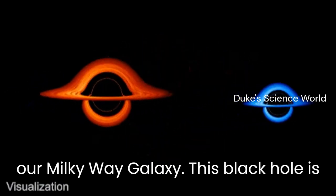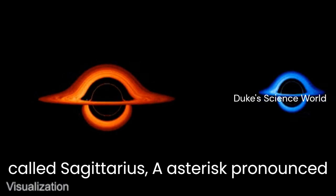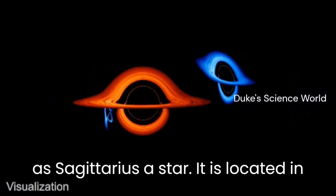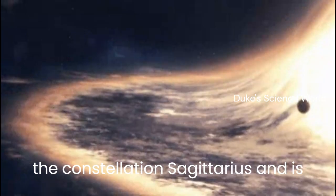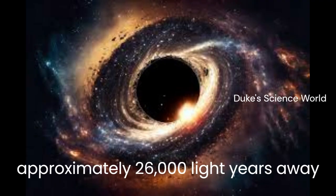This black hole is called Sagittarius A asterisk, pronounced as Sagittarius A star. It is located in the constellation Sagittarius and is approximately 26,000 light-years away from Earth.